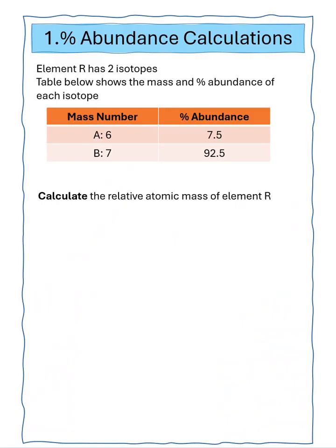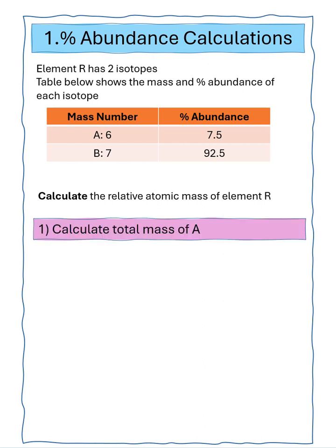Question one says element R has two isotopes. The table below shows the mass and percentage abundance of each isotope. Element R is made of two isotopes with mass numbers of 6 and 7, and percentage abundances of 7.5 for A and 92.5 for B. We've got to calculate the relative atomic mass of element R. The first thing we need to do is calculate the total mass of A: mass number 6 times abundance 7.5, giving a total of 45.